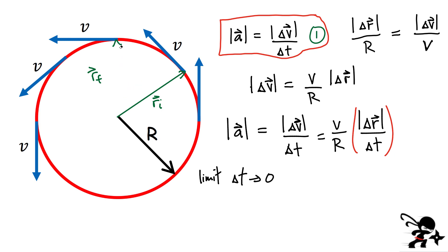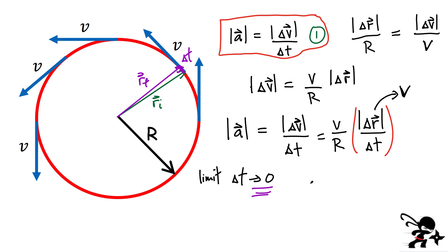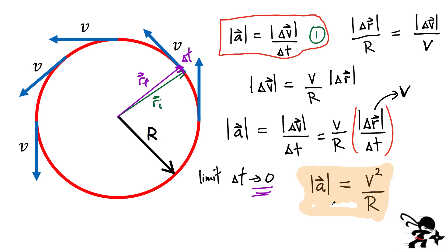Now what we want to do is take the limit when delta t is very, very small. If delta t is small, my final position would be right next to the initial position, and the delta r vector becomes very small. In that limit, delta r over delta t is simply equal to the speed of the object — the tangential speed, which is the same value v. So at the end, the magnitude of this acceleration is v multiplied by another v, which gives v squared divided by the radius r. That is the magnitude of our centripetal acceleration.